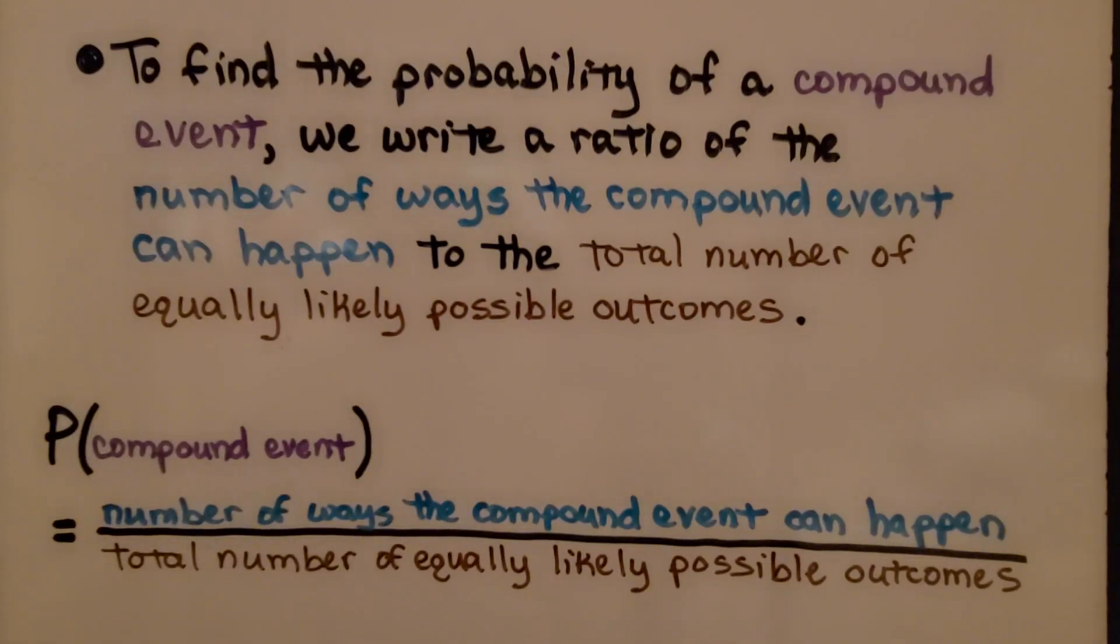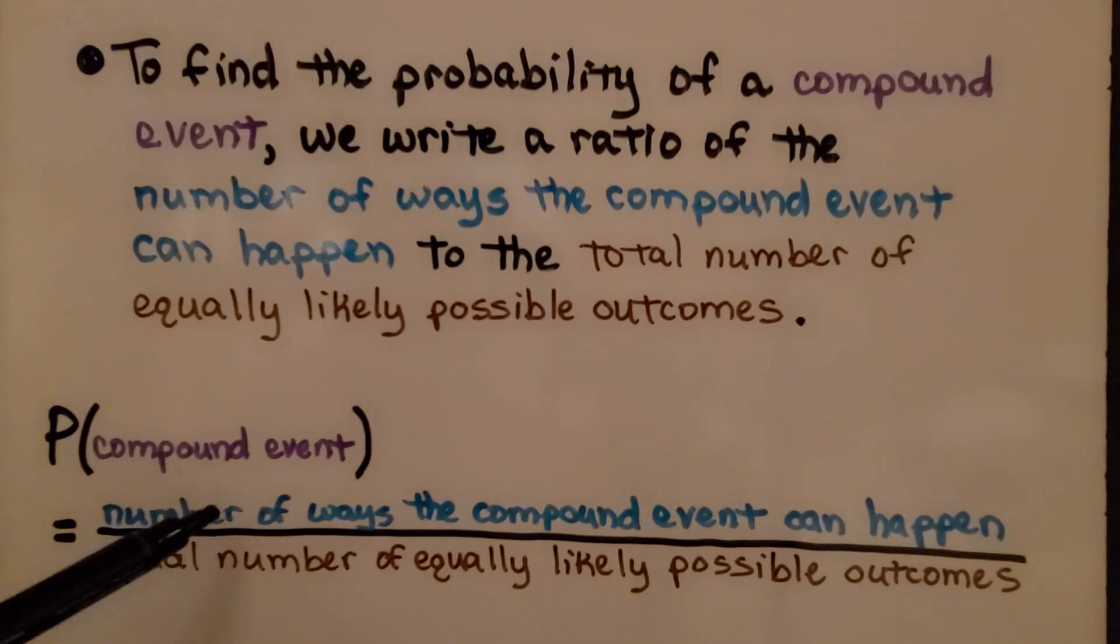To find the probability of a compound event, we write a ratio of the number of ways the compound event can happen to the total number of equally likely possible outcomes.